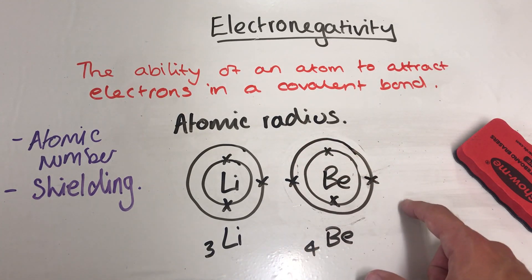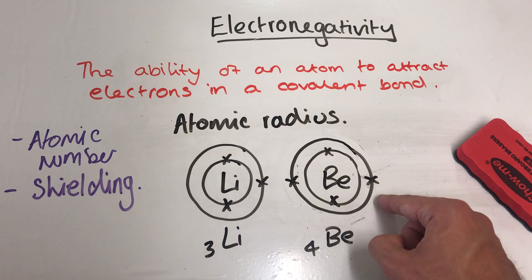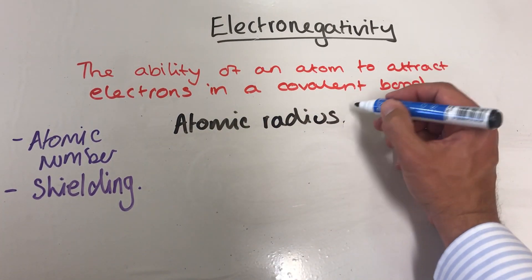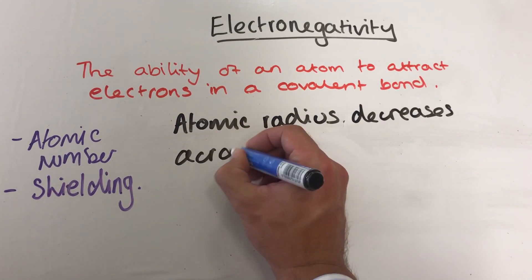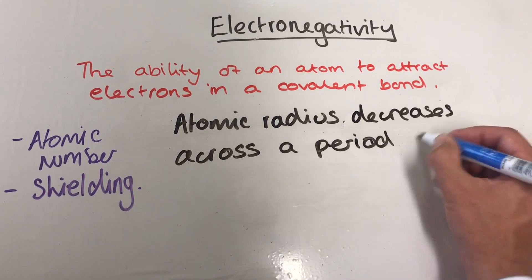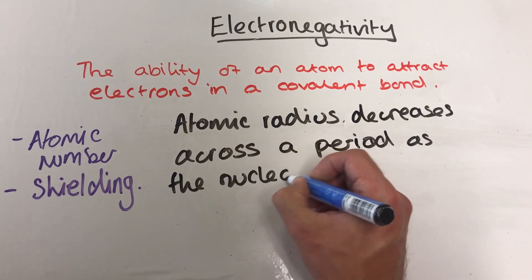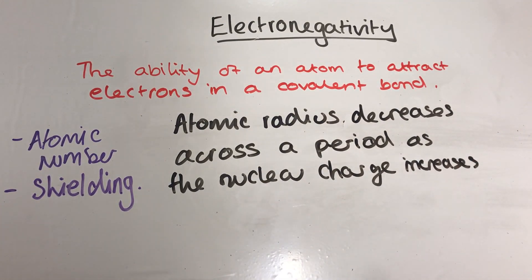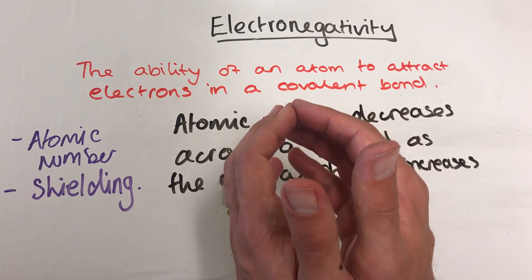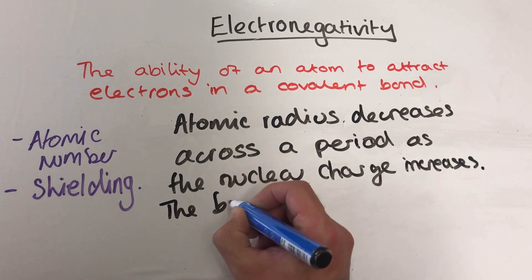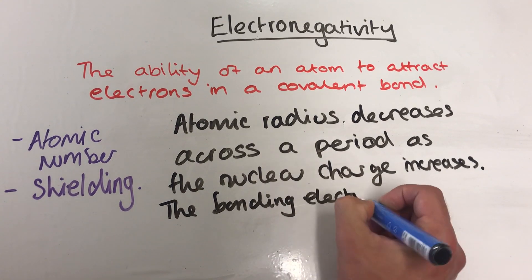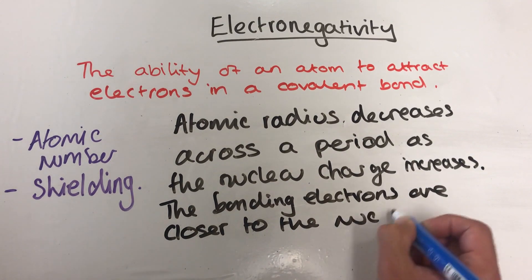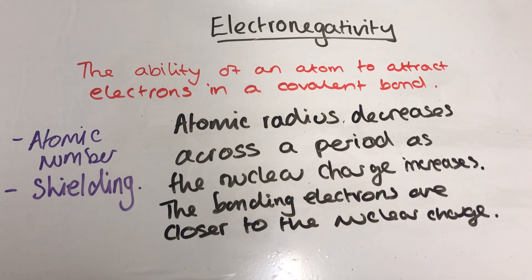The atomic radius is smaller because the nuclear charge is greater, so the electrons are being pulled in more by the nucleus due to the greater positive charge. As you go across the period the atomic radius gets smaller, which brings the electrons you're trying to attract in the covalent bond closer to the nucleus. In smaller atoms, the outer electrons involved in bonding are closer to the nucleus, so there's a greater attraction to the nucleus. The atomic radius decreases across the period as the nuclear charge increases, so the outer bonding electrons are closer to the nuclear charge and therefore more attracted to that nucleus.